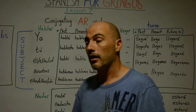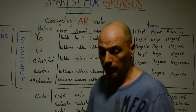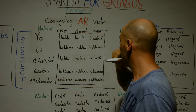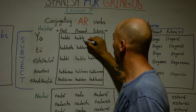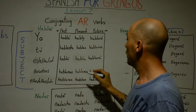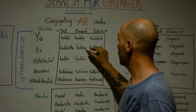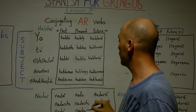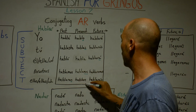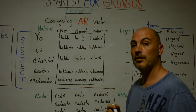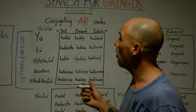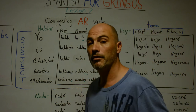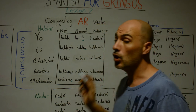Before we get to our last example, something worth noting: look at the verb endings. First: the ending O. Second: the ending S. Third: the ending A. Fourth: the ending MOS. And last: the ending N. These are all indicators, and they're pretty much the same across AR, ER, and IR verbs. There's a common trend in how they're put together.